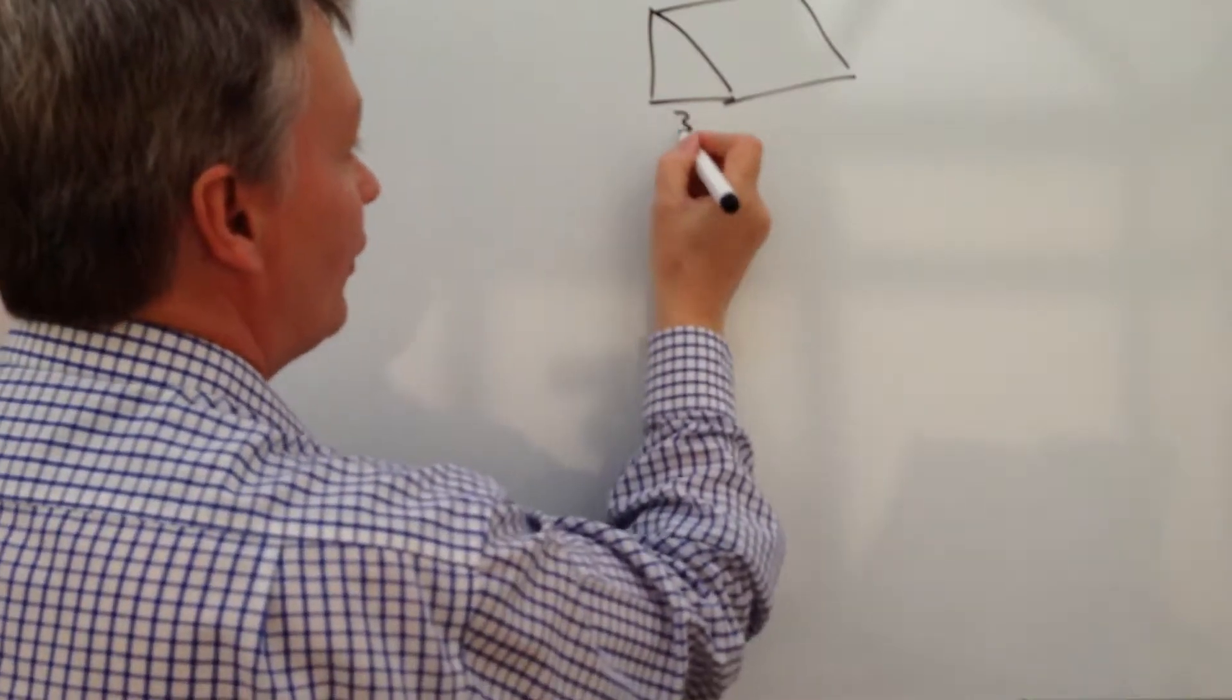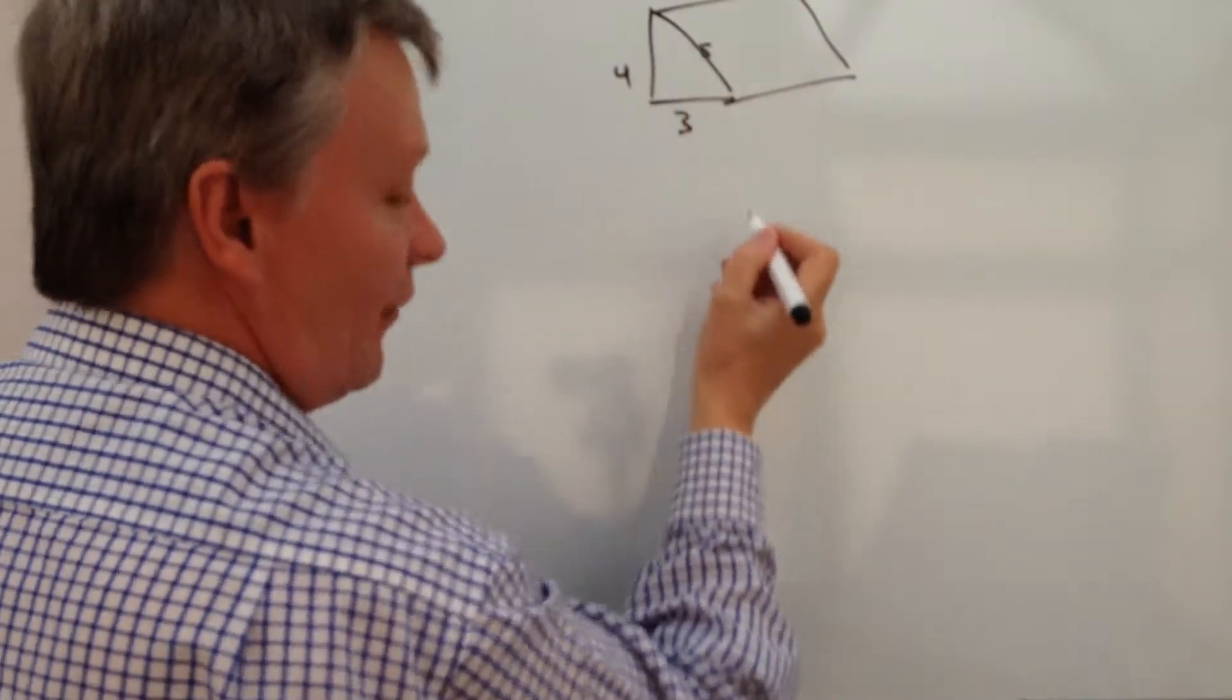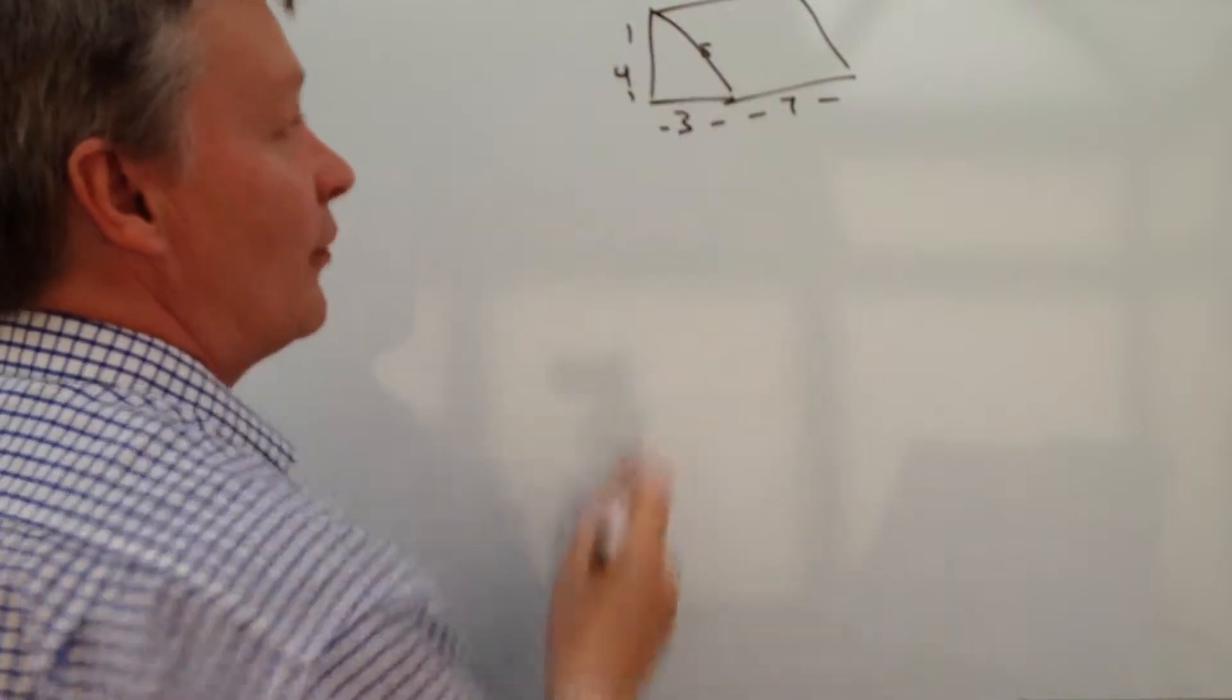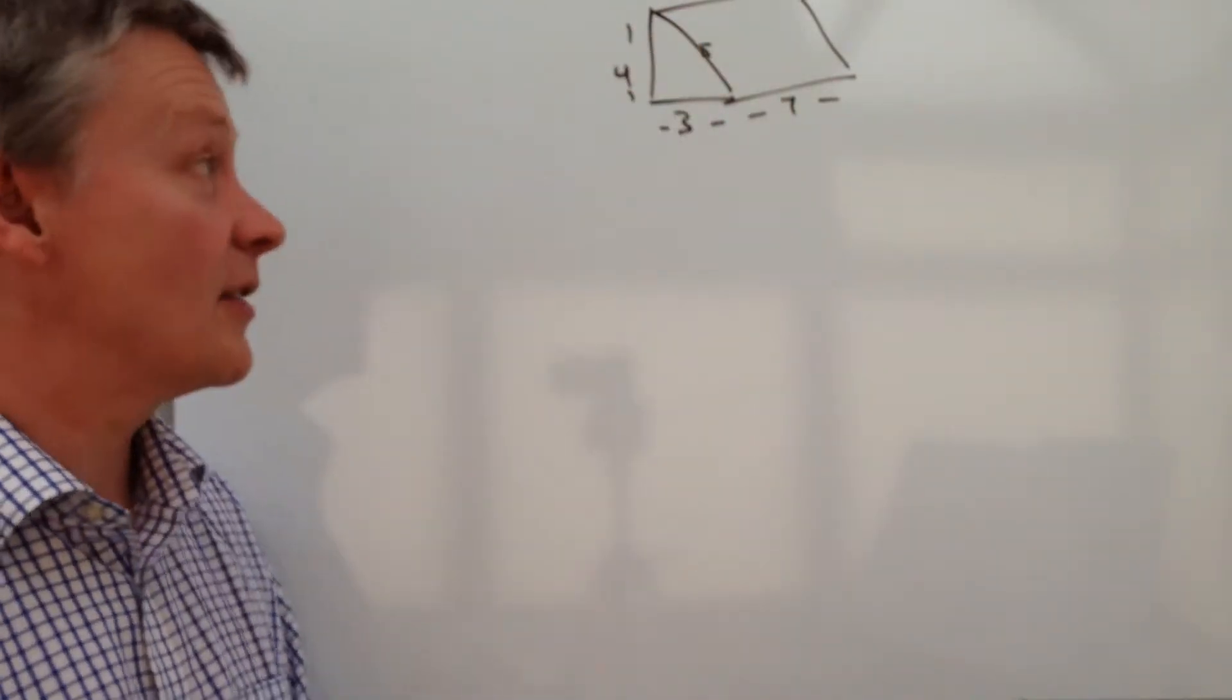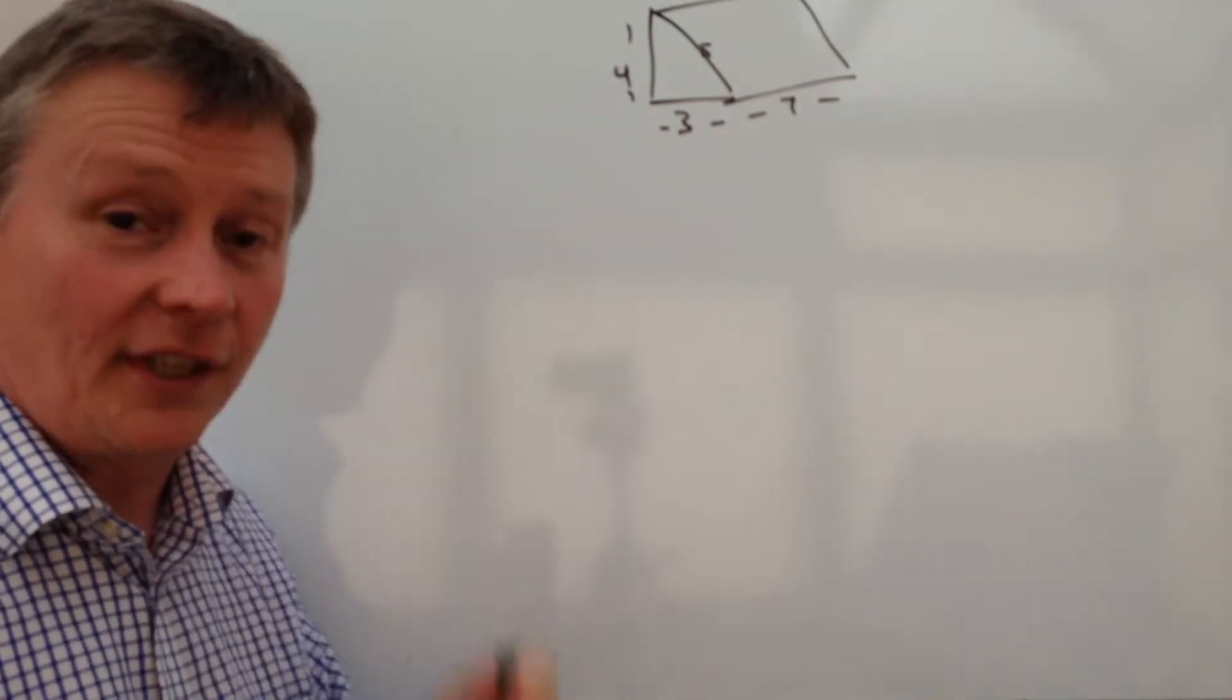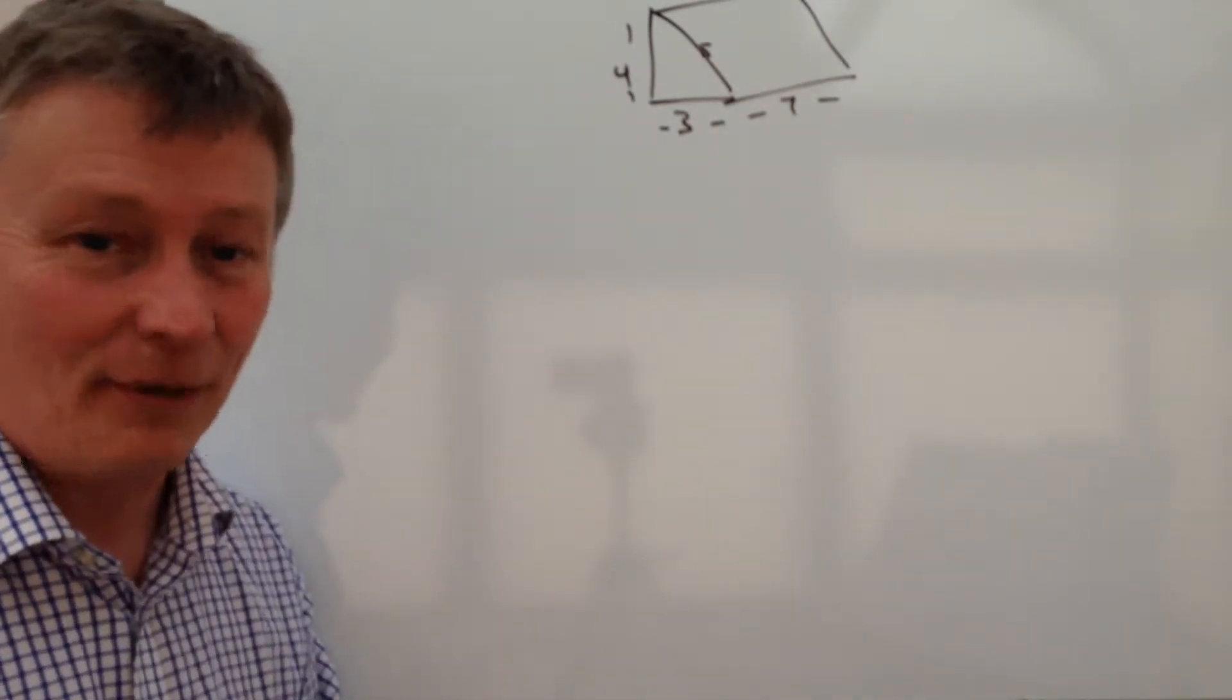So it was going to be 3 and 4, this bit here was 5 and this bit over here was 7. And the dimensions that we were given were all in centimeters and we calculated the total surface area for that particular triangular prism at 96 centimeters squared.